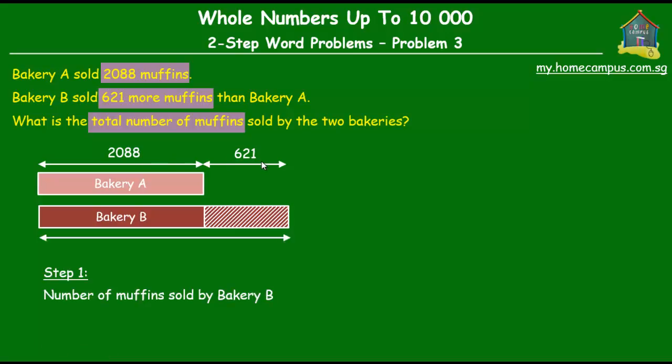The first step of the solution would be to find out the number of muffins that Bakery B sold, and that would be equal to the sum of 2088 and 621. Let's do the working here on the right of the screen. We won't go through the detailed steps of addition because we covered that in a previous tutorial on addition. So if you're not sure how to add with regrouping, please go watch the tutorial.